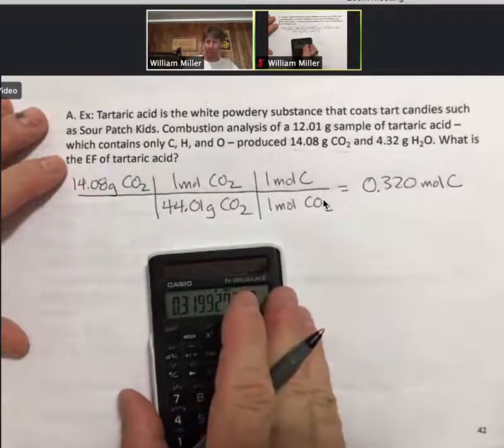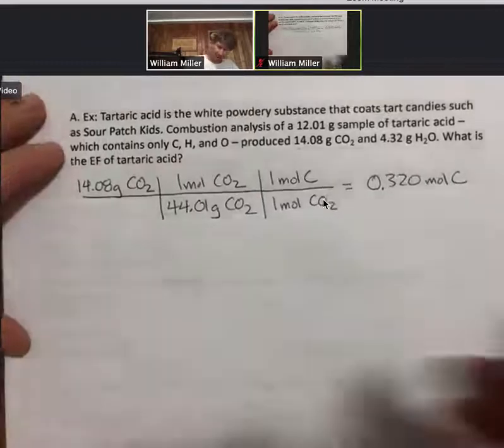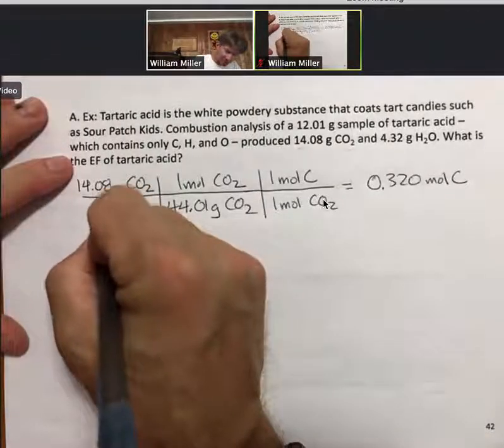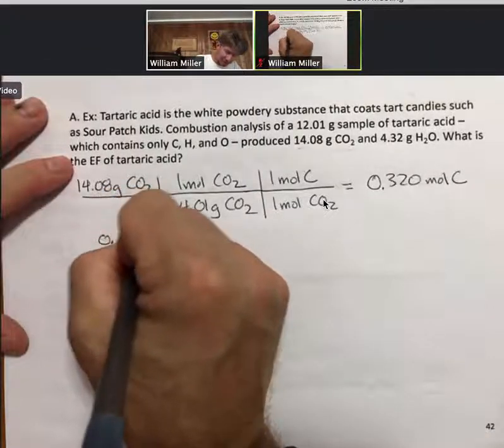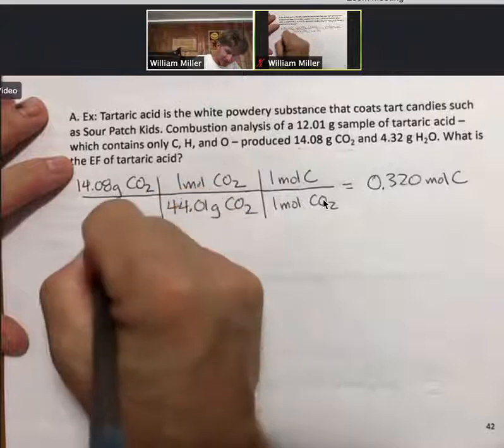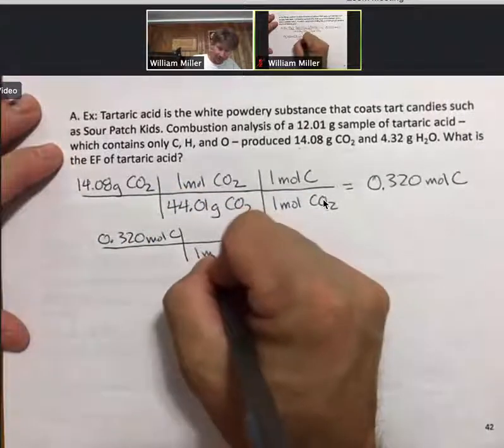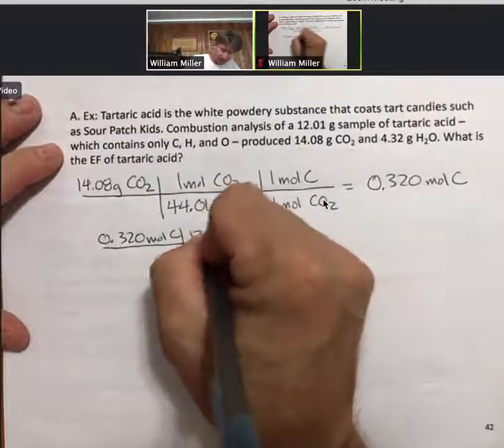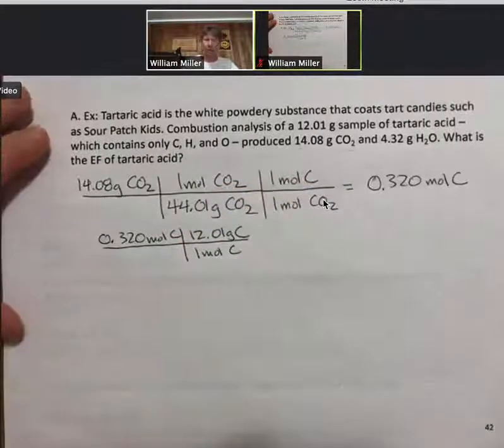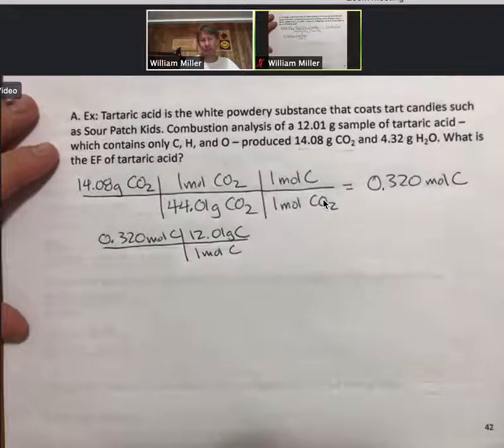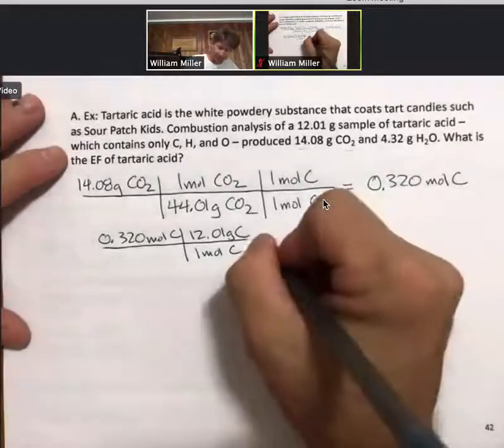Now, I also need grams of carbon, so I'm going to do that next. And I haven't told you why, but I'm going to go ahead and do it anyway. In one mole of carbon, there are 12.01 grams of carbon, and again, that's using the numbers from the periodic table.